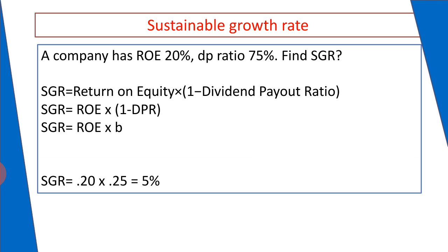Sustainable growth rate = Return on Equity × (1 − DP ratio) = 20% × (1 − 0.75) = 20% × 0.25 = 0.05, which is equal to 5%.